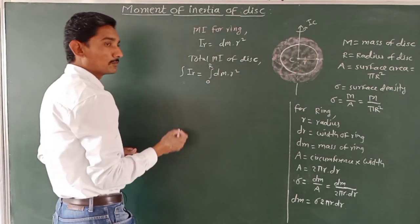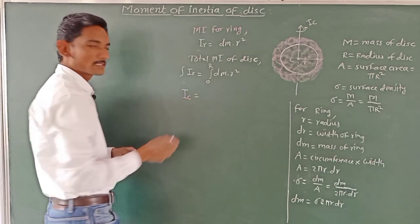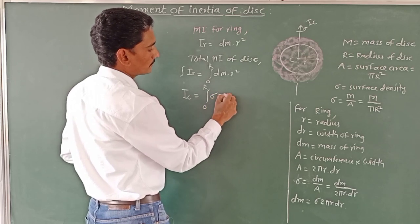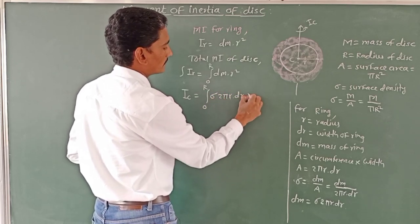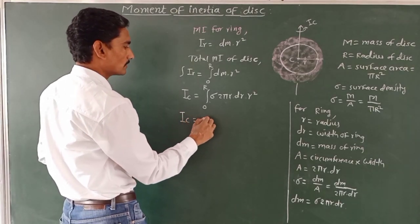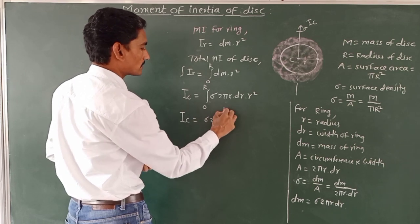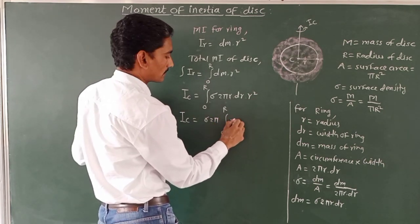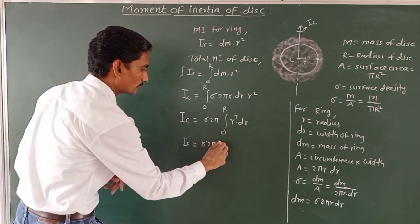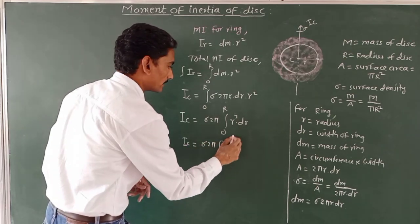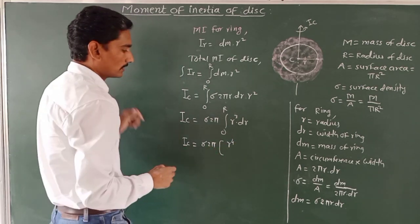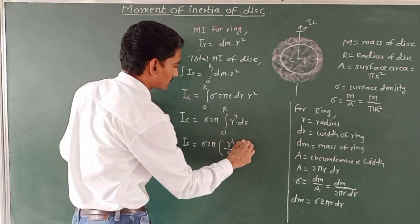The total moment of inertia of the disk about an axis passing through the centre equals I_C = σ · 2π · ∫₀ᴿ r³ · dr, since σ and 2π are constant factors. Evaluating the integral gives I_C = σ · 2π · [r⁴/4] from 0 to R, which equals σ · 2π · R⁴/4.